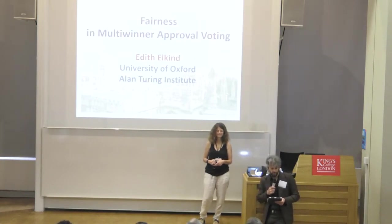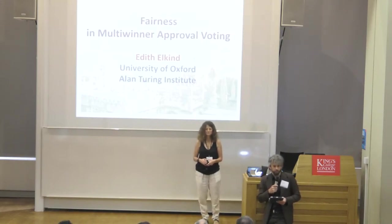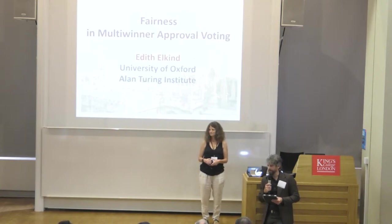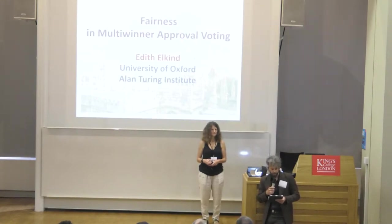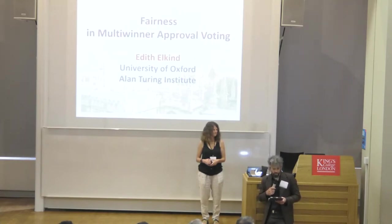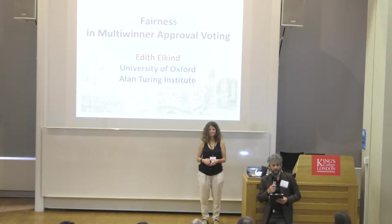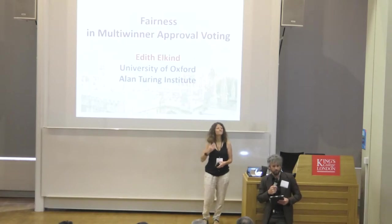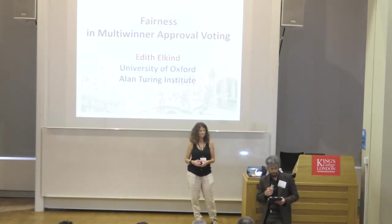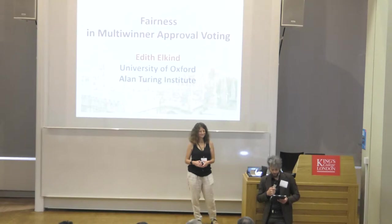I'm really delighted to introduce Edith Elkin, who is a professor at Oxford University. She's been doing some of the foundational work for several decades in computational social choice, working on problems in voting and fair division. She's been one of the members of the EC community for her entire career, with early work opening up new areas in algorithmic mechanism design. She wrote the first paper on frugality in mechanism design, studying path auctions in 2004.